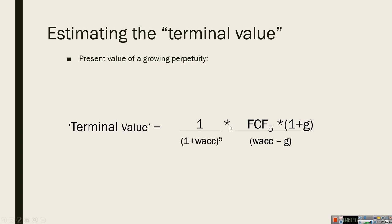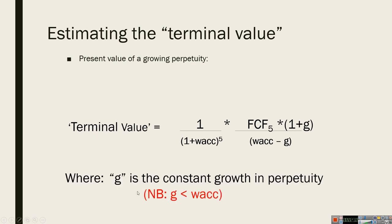We still have to discount this back to the present value, and that's what we're doing on this term over here. The key issue is: what about this G? What should it be? It represents the cash flow growth — the growth of the cash flows, not the revenue or anything else, but the cash flow into perpetuity. And it's obvious from this formula that G must be less than WACC, so we need to talk about that as well.